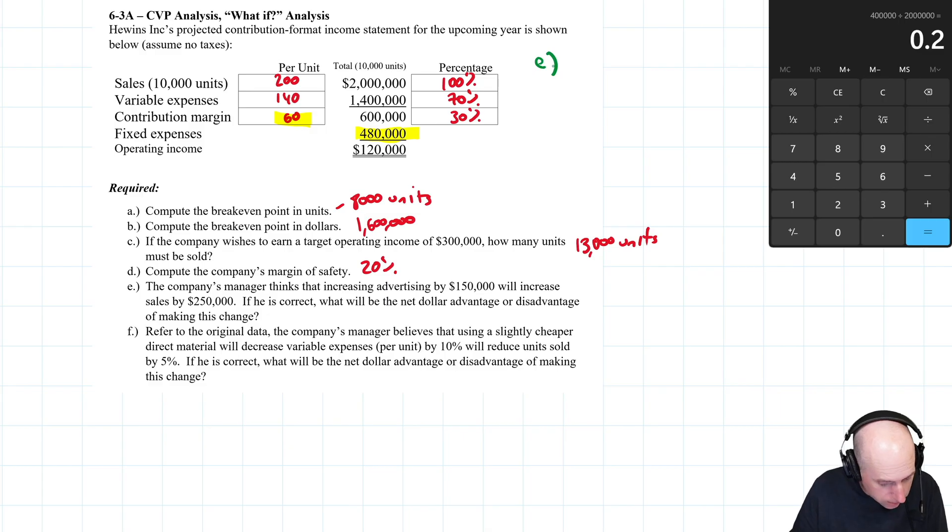The company's manager thinks that increasing advertising by $150,000, that's a fixed expense, will increase sales by $250,000. If he's correct, what's the dollar advantage or disadvantage of making the change? I'll tell you the way I would do it, then I'll show you a quicker way. I'd go: how many units are we going to sell? If we're increasing sales revenue by $250,000 and we're still selling for $200 a unit, he's saying I can add 1,250 units to the sales. The old sales were 10,000, the new sales are 11,250 units.